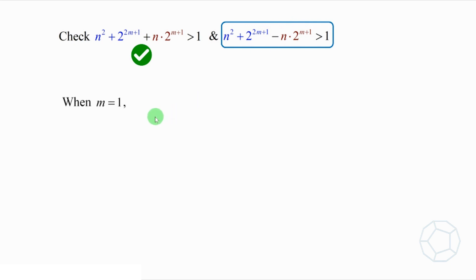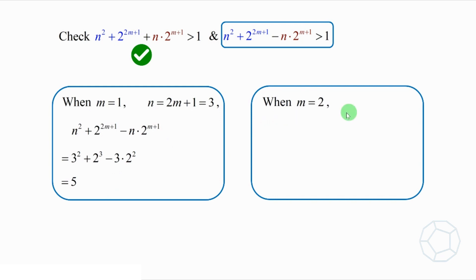Let's work out some small values. When m equals 1, n equals 3. This expression equals 5. When m equals 2, n equals 5, then the expression equals 17. Both of them are larger than 1. So far, so good. But it's impossible to check each value of m. We need a general way to do so. What's that? Right. It is the mathematical induction.